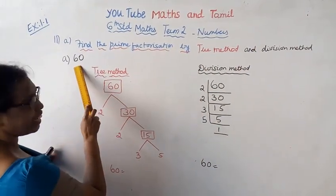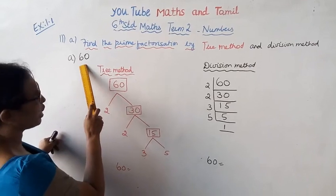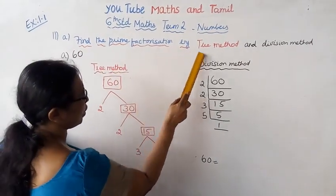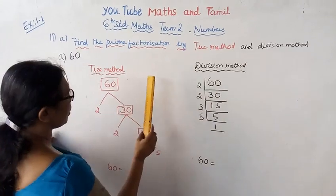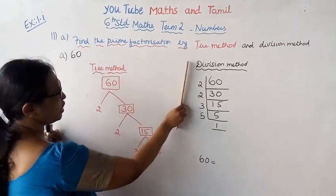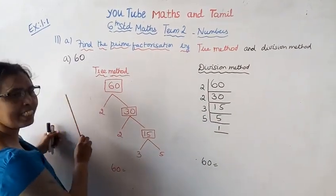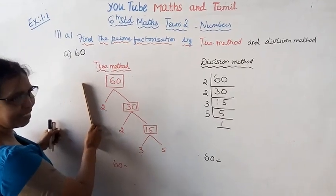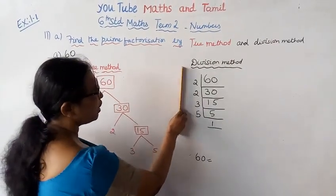We are going to find the prime factorization of 60. We will use two key methods. Find the prime factorization by tree method and division method — both methods are easier to use. What is the procedure? We divide.